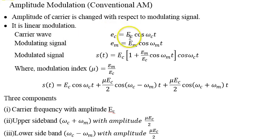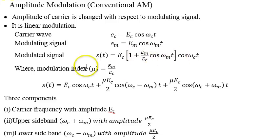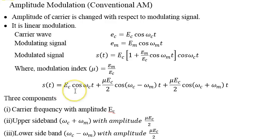The carrier wave is taken as Ec·cos(ωc·t), the modulating signal as Em·cos(ωm·t), and the modulated signal s(t) is expressed as Ec·(1 + Em/Ec·cos(ωm·t))·cos(ωc·t). The parameter Em/Ec is called the modulation index, also sometimes called depth of modulation. If we represent this signal in the frequency domain by expanding it, it shows that there is a carrier component.